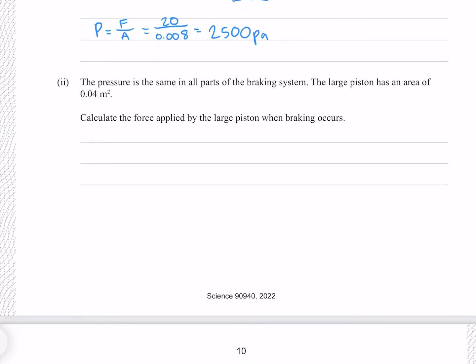The pressure is the same in all parts of the braking system. The large piston has an area of 0.04 meters squared. Calculate the force applied by the large piston when the braking occurs. So we know that our pressure is equal to our force divided by our area. Since we're looking for force, we need to solve this for force. We can do so by multiplying both sides by the area. Putting our pressure from above and our new area in.